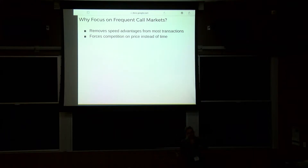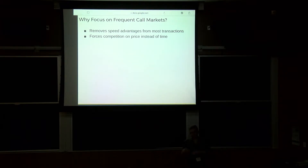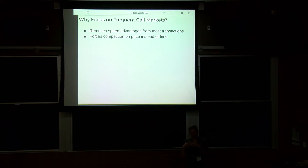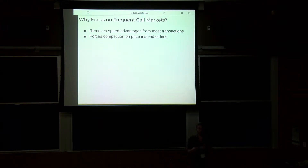The second reason, more subtle, is that it forces competition over price instead of time. In a continuous market, if your order reaches the matching engine first, you transact regardless of what price you set. But in a batched auction, if both orders arrive within the clearing interval, whoever has the more favorable price will transact — so you get more efficient pricing.